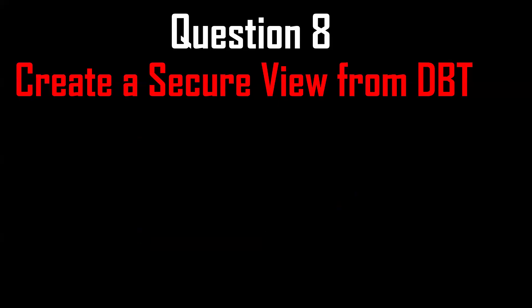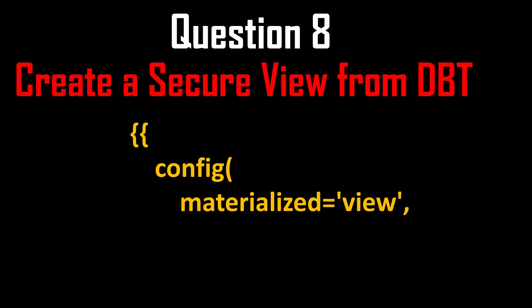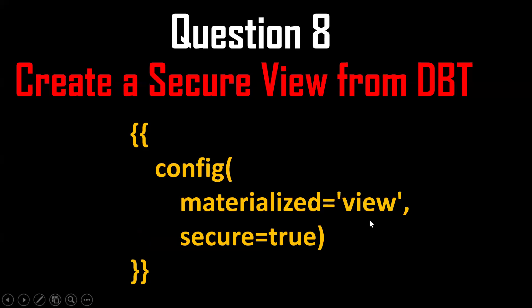The next question is: how to create a secure view from dbt? Same approach using the config macro with 'materialized = view', plus an extra option: 'secure = true'. When you put 'secure = true', a secure view will be created.